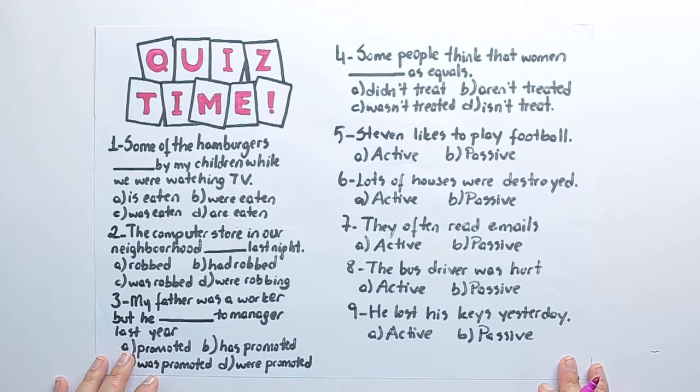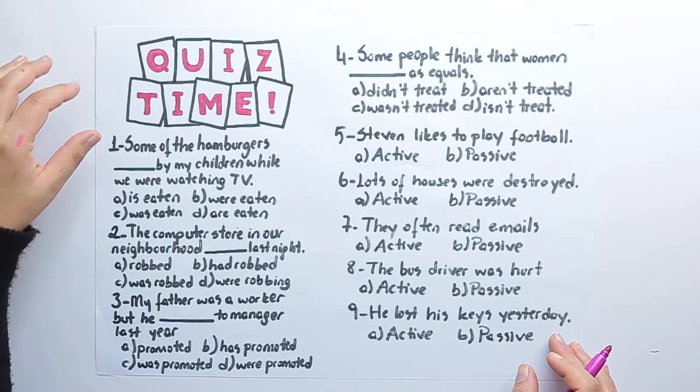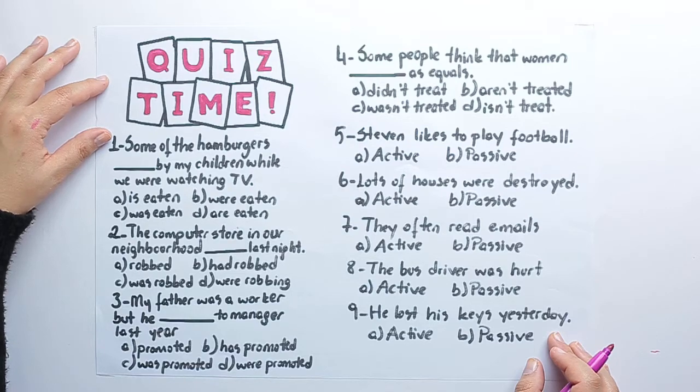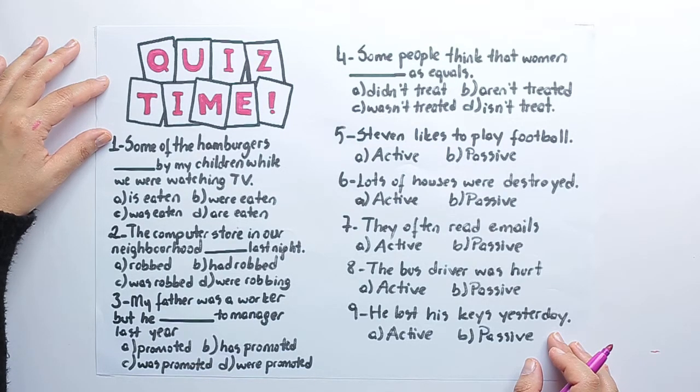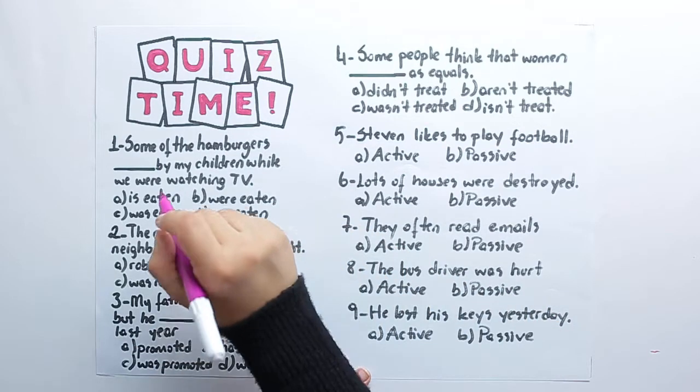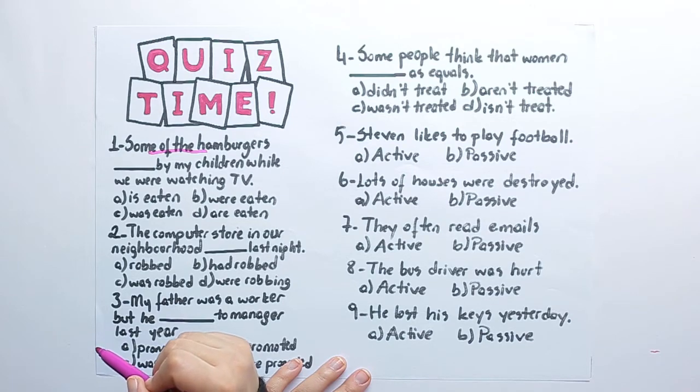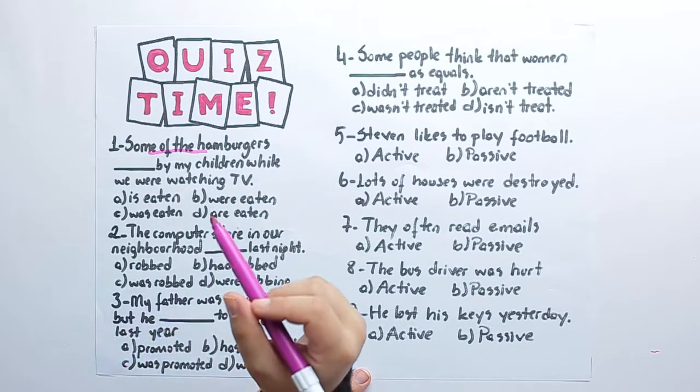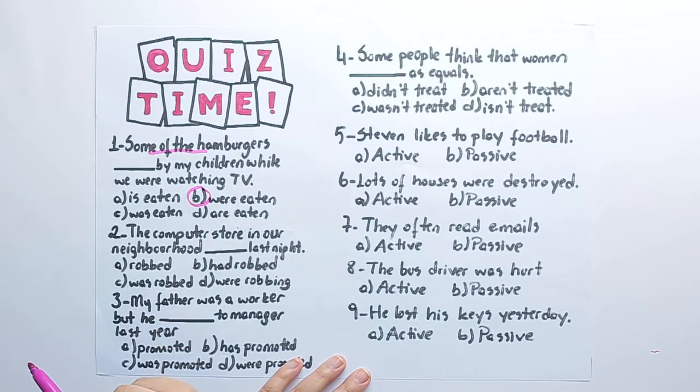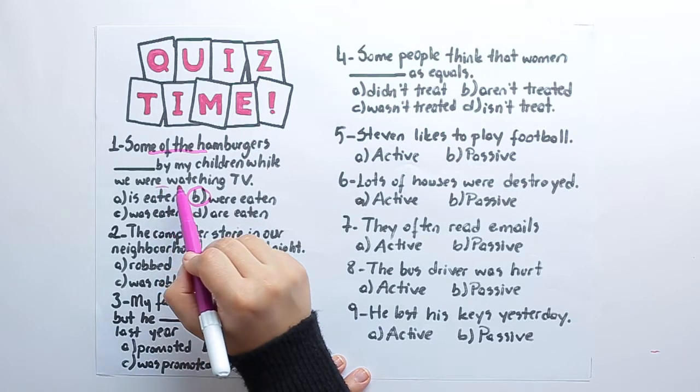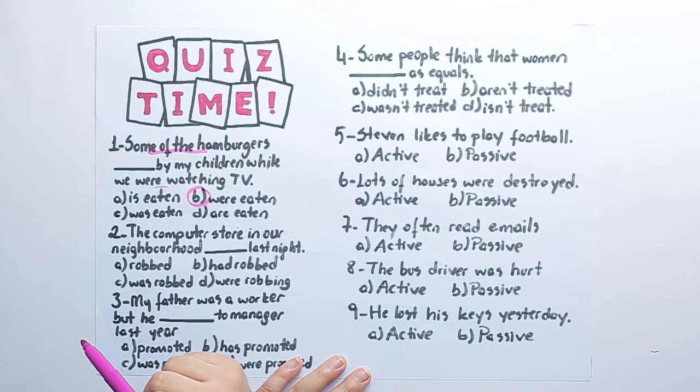And the last page is for quiz time. Some of the hamburgers by my children while we were watching TV. Some of the hamburgers, plural, right? And past simple. So it is were eaten while we were watching, so it should be past simple.